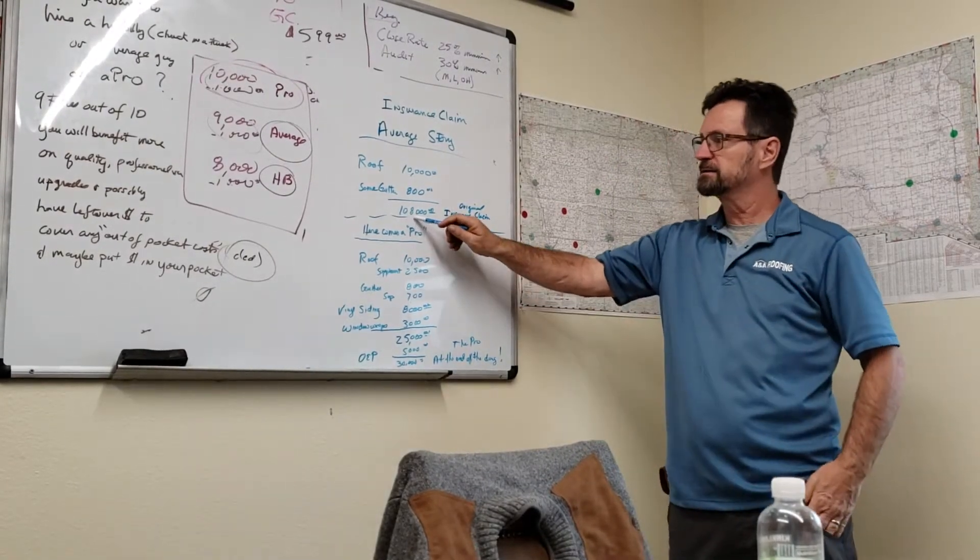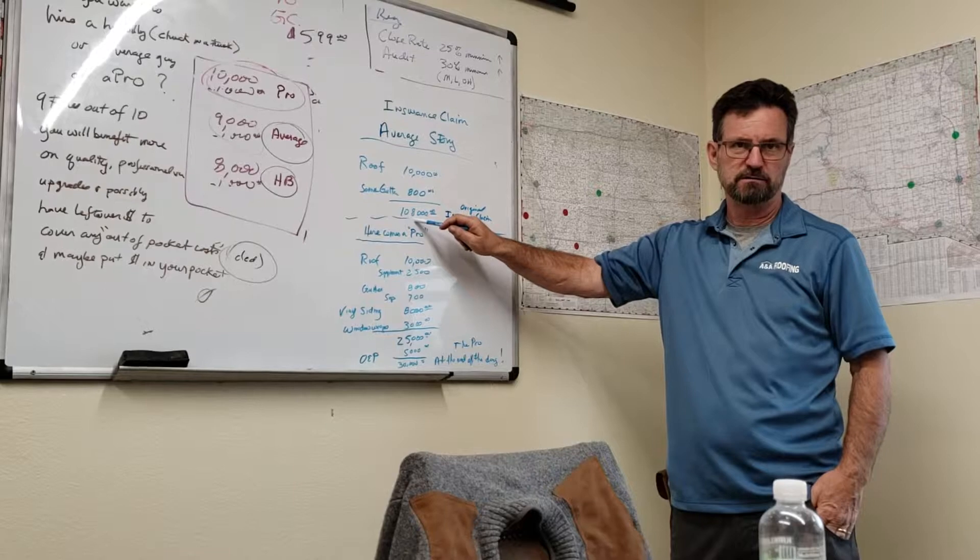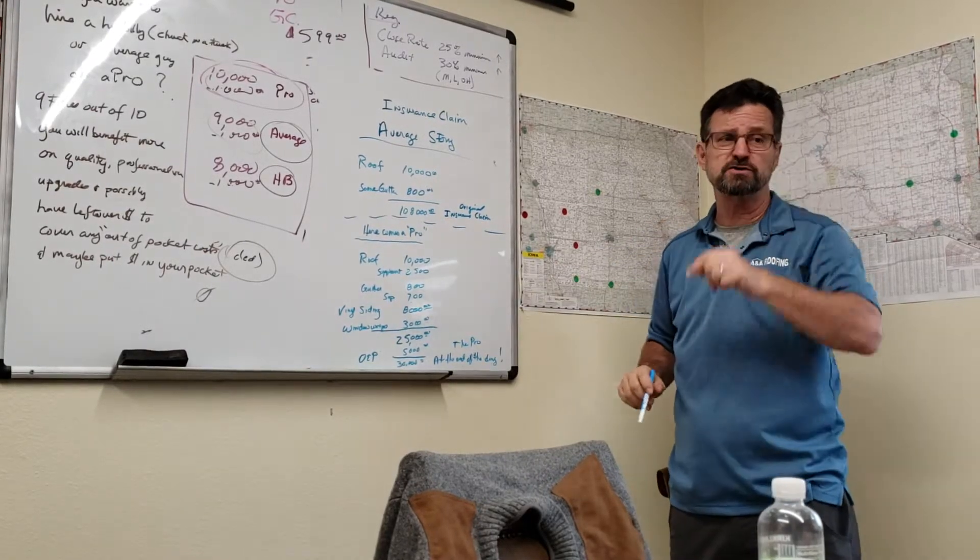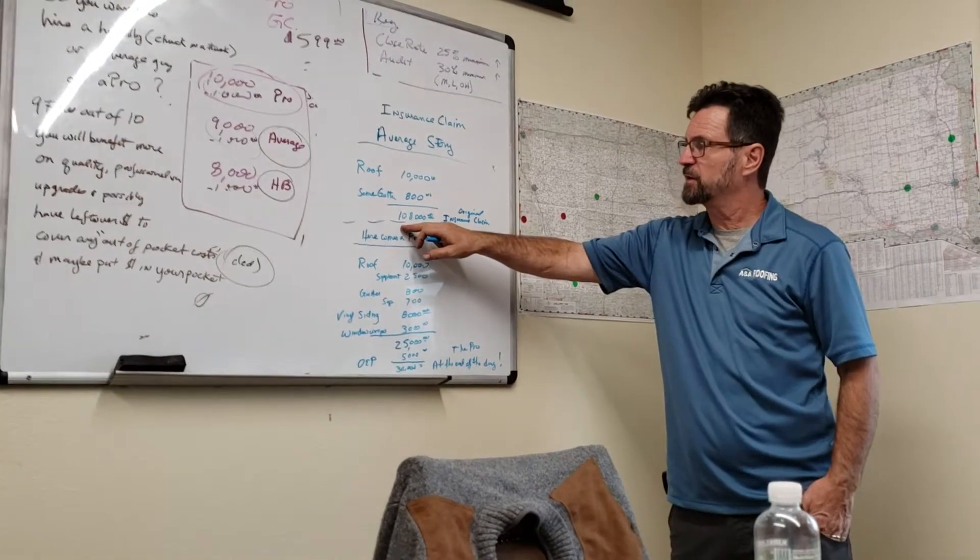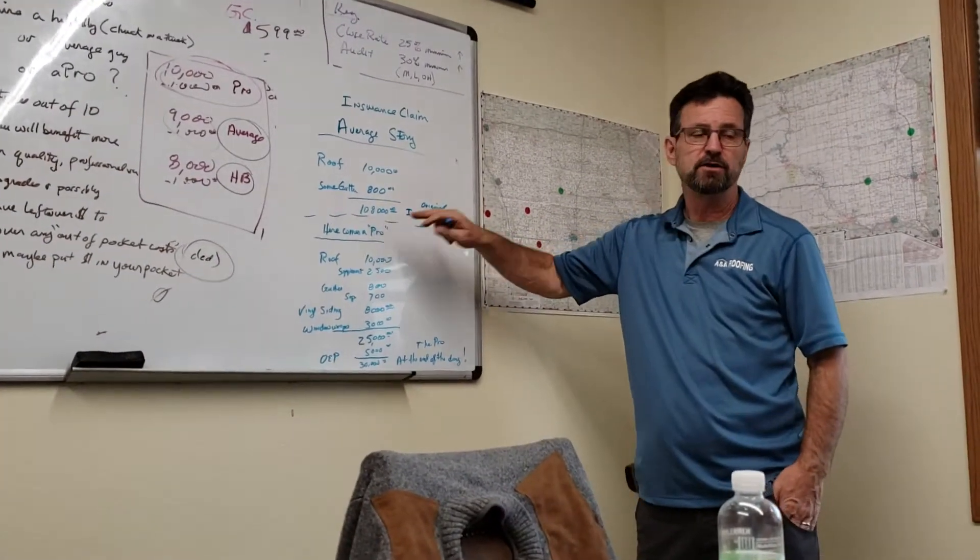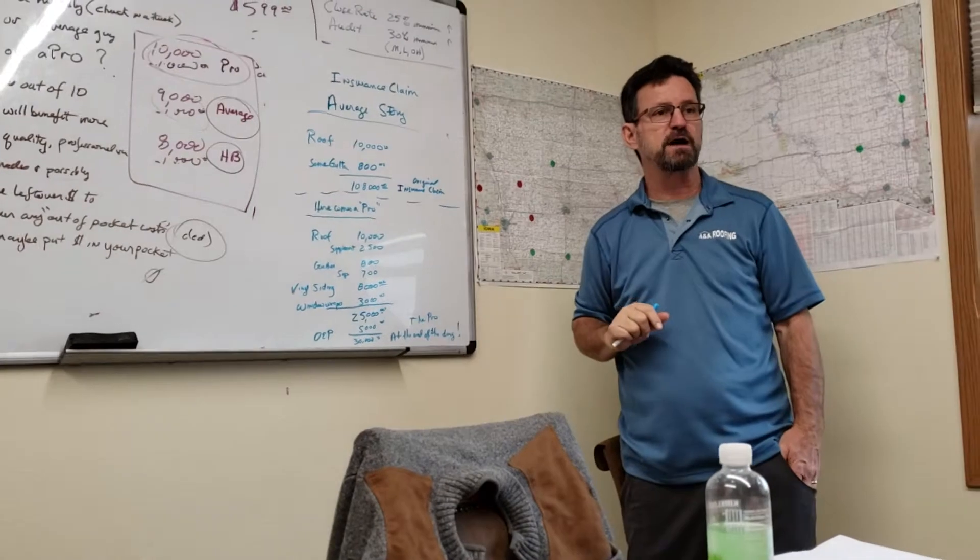So you're going to get all this less your deductible. Your deductible, you have to pay your contractor. And if it's $1,000, then that means the insurance company is only going to pay $9,800 of it. You have to pay the extra $1,000 to your contractor.